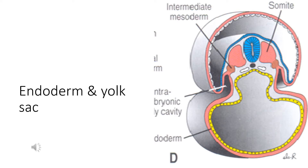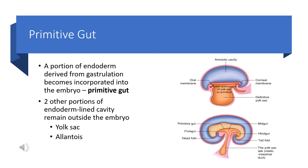The endoderm is very important from the viewpoint of the development of the gastrointestinal tract, because it is the endoderm that gives rise to the various structures related to the gastrointestinal system. With these ideas, we will start with the development of the gastrointestinal tract.